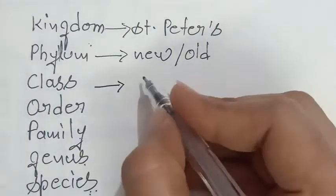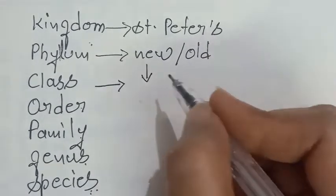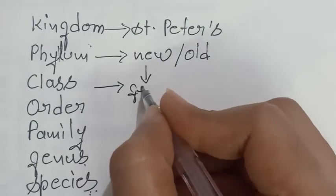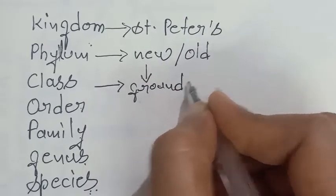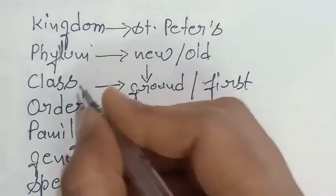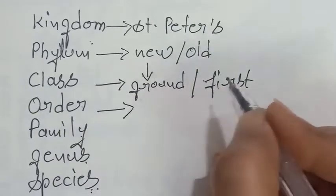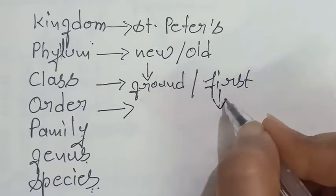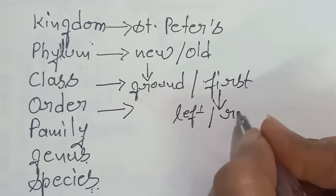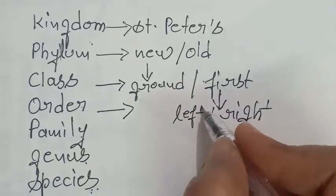Then class, like you are in the new building, for example you are in new building, so which floor, ground floor or first floor, it will act as a class. Then order, like you are in the first floor, so first floor left wing or right wing.